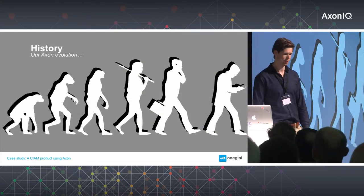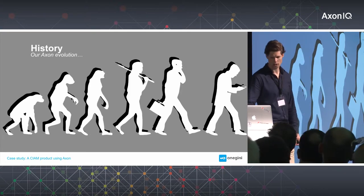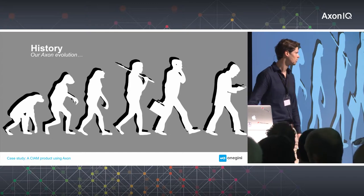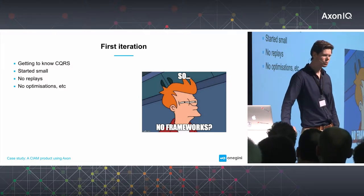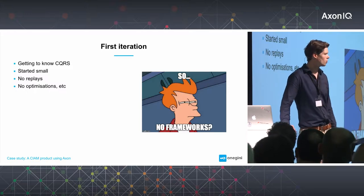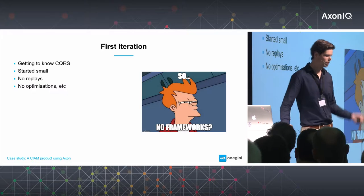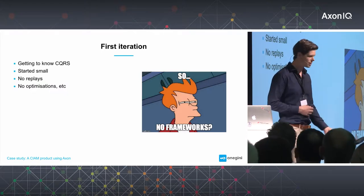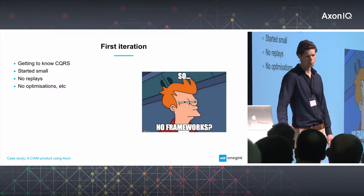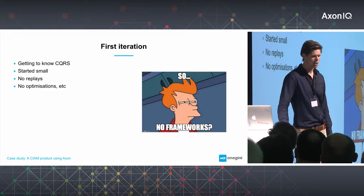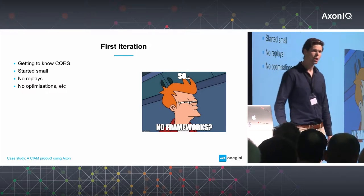So how did we come to use Axon? We first started about four years ago with this application. We heard of CQRS and were experimenting with it to find out what it was, but we didn't want to use a framework right away because we really wanted to get to know CQRS and see whether it would fit our needs. So we started small — we didn't need all the advanced features like replays, event upcasters, or all that interesting stuff right away. That's one of the lessons learned: start small and simple. If you want to do something complex from the start, you will always run into pitfalls and maybe forget about the core of your system.